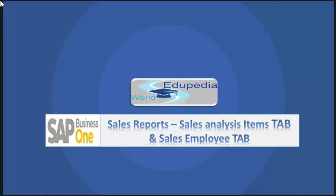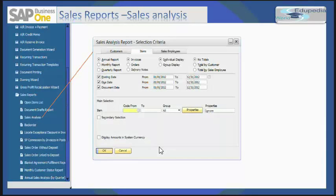In this session of sales report, we will take a look upon the sales analysis tab and sales employee tab. The sales analysis is found in sales report as sales analysis, and we will be seeing the items tab. This sales analysis report provides in-depth information about sales volume achieved with customers through business.